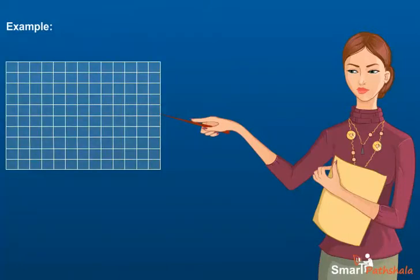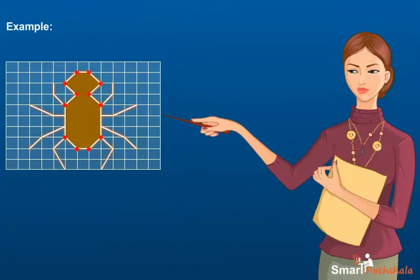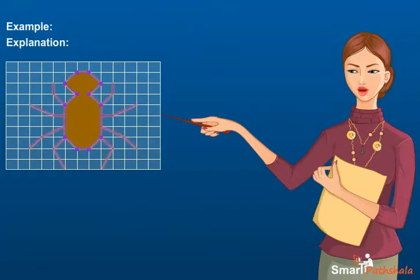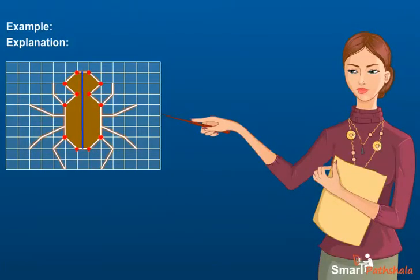Example: draw a line of symmetry in the following figure. Explanation: we can draw the line of symmetry as shown here. The figure has one line of symmetry.